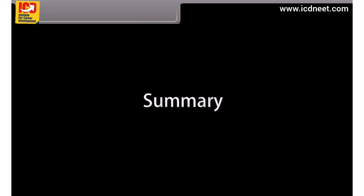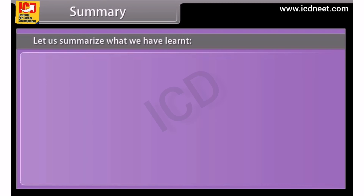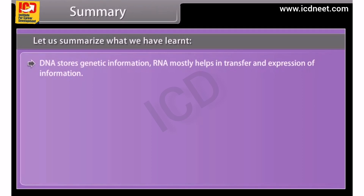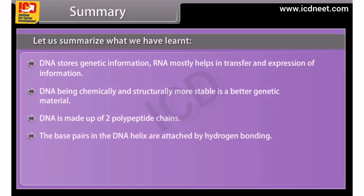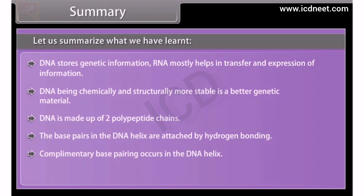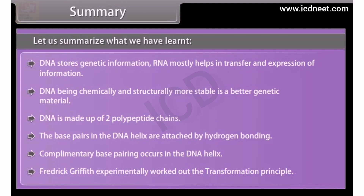Summary. Let us summarize what we have learned. DNA stores genetic information. RNA mostly helps in the transfer and expression of information. DNA, being chemically and structurally more stable, is a better genetic material. DNA is made up of two polynucleotide chains. The base pairs in the DNA helix are attached by hydrogen bonding. Complementary base pairing occurs in the DNA helix. Frederick Griffith experimentally worked out the transformation principle.